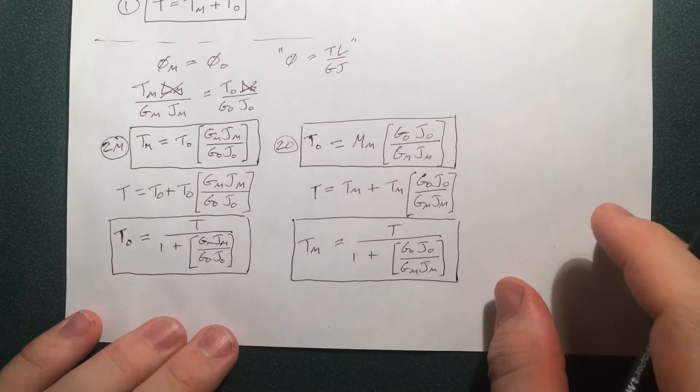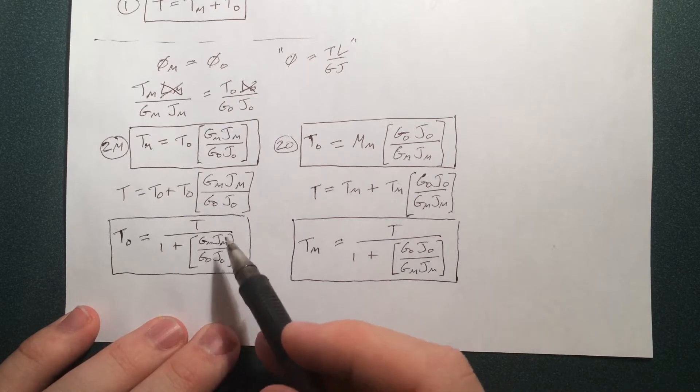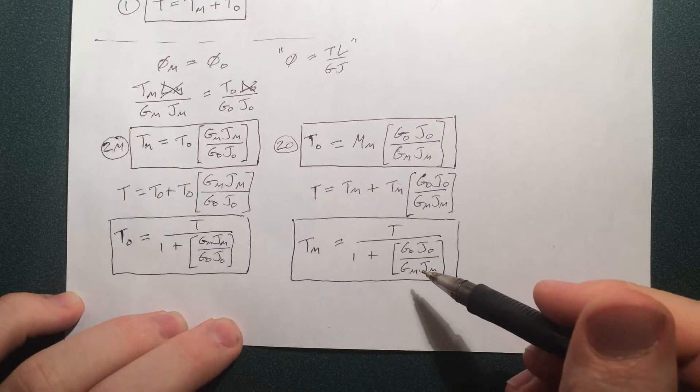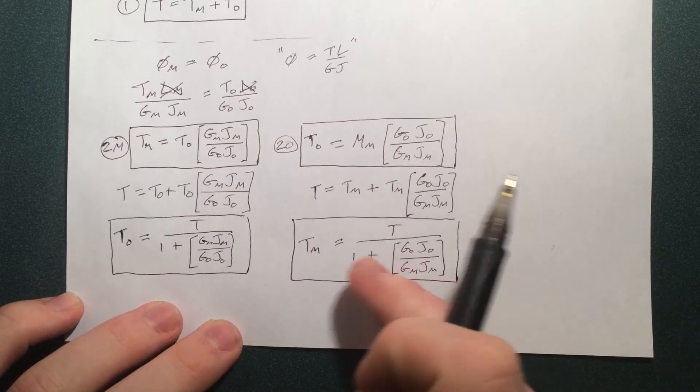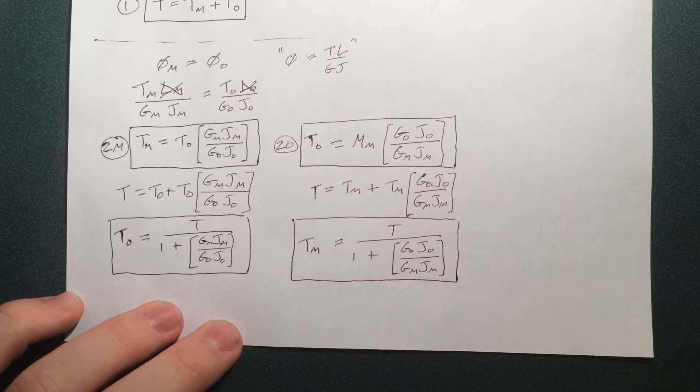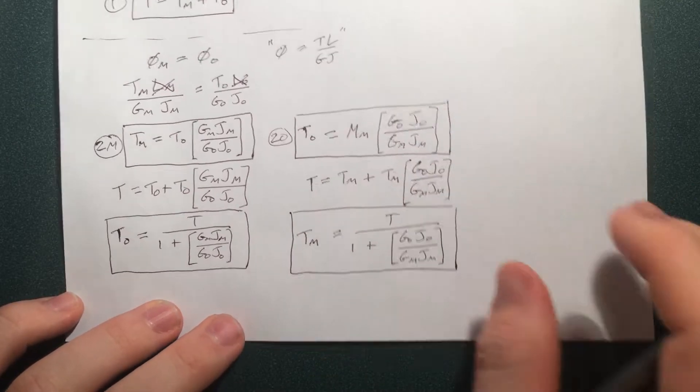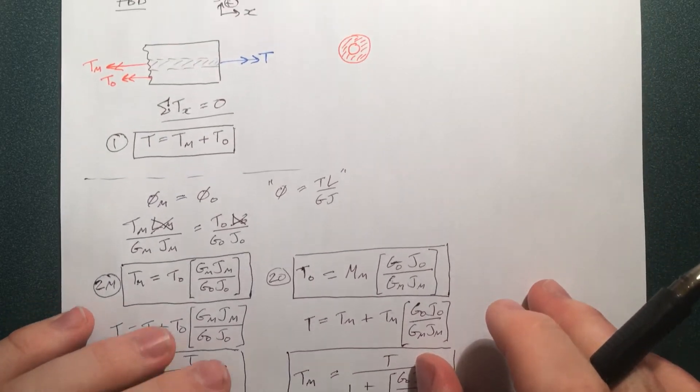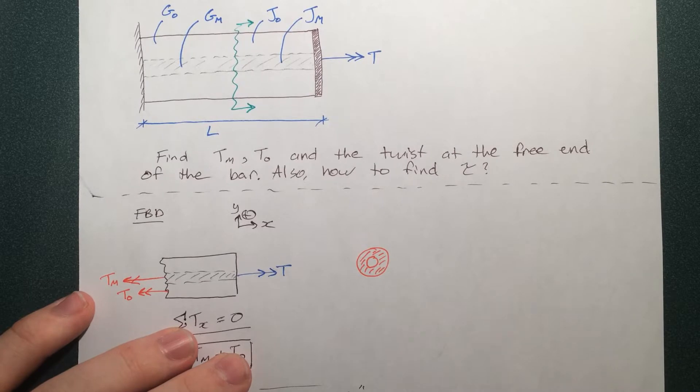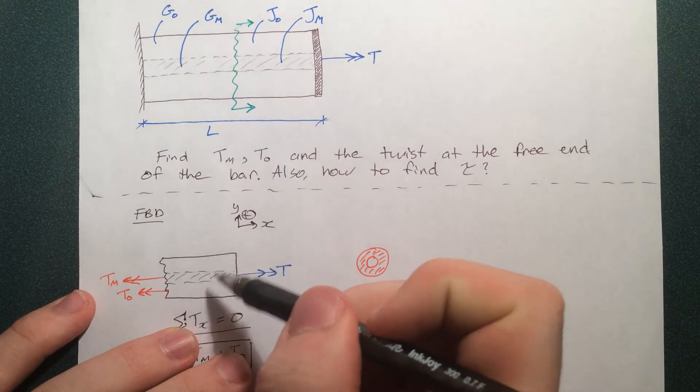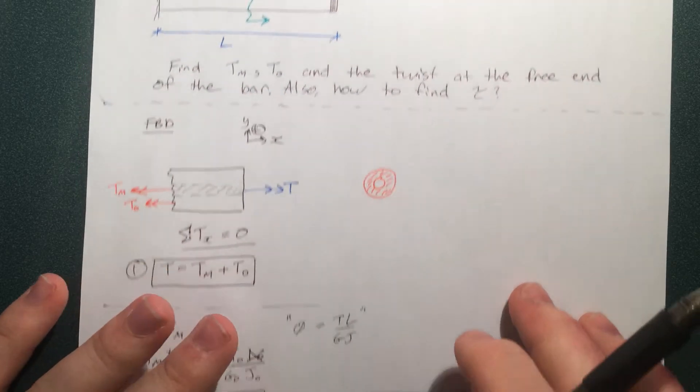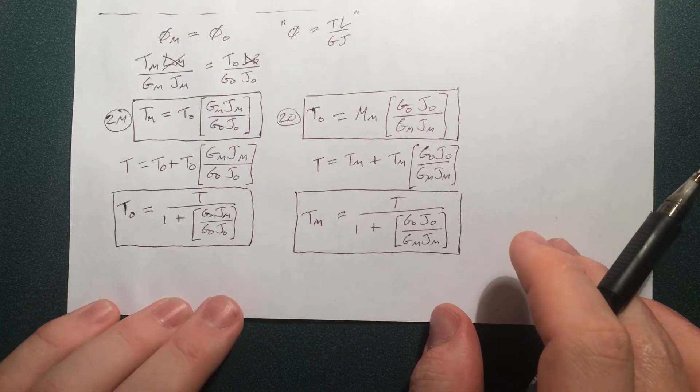And note the striking similarity between these equations. The only difference is that this piece here is flipped over. So that's two things. First of all, it allows you to check whether you did it right. If this equation looks vastly different than this one in terms of the overall symmetry, then you've probably done something wrong. Second, it goes to tell you how the torques are distributed in this statistically indeterminate case. It has to do with the properties of the piece rather than just the forces or the torques on the piece.